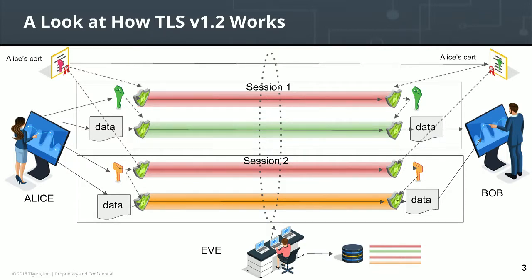By getting one key from Alice, Eve can now decrypt all of the traffic she's captured over days, months, or years between Alice and Bob. The real risk is that if a long time ago Alice picked a bad certificate, or at some point her key gets compromised, all traffic she's sent that hung on that private certificate key is now compromisable. This is not perfect forward secrecy — a mistake made in the past can be used to decrypt all data, not only up to that point but beyond it. This is how TLS 1.2 normally works.